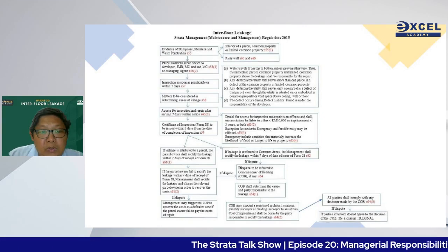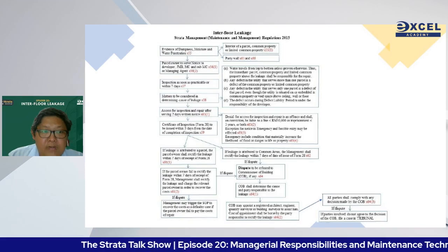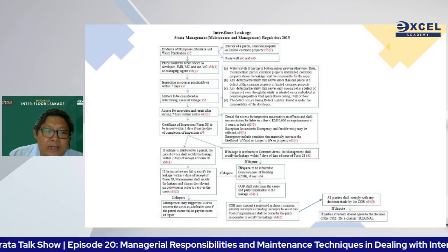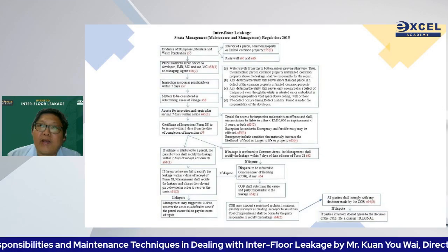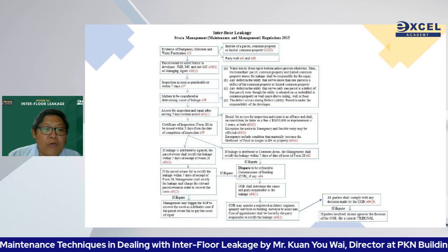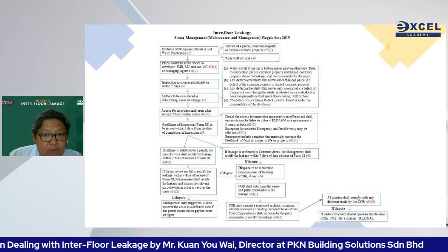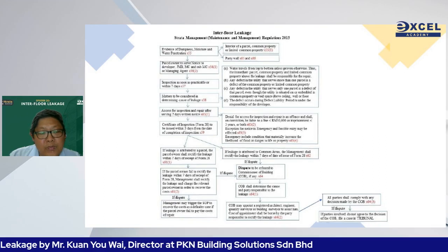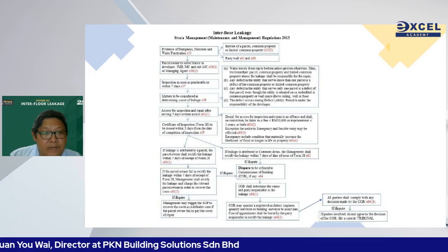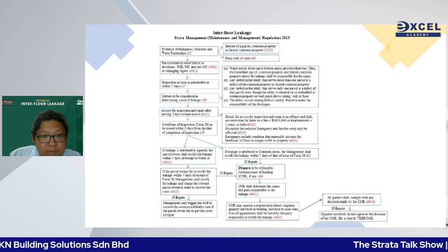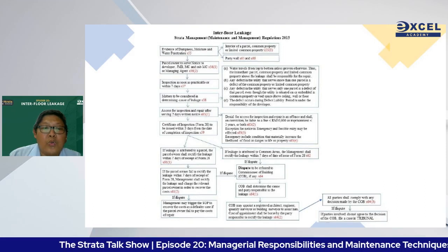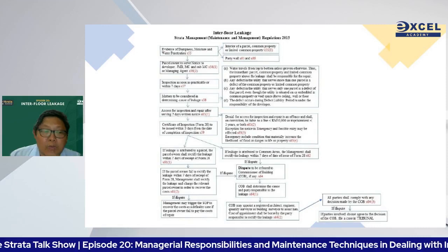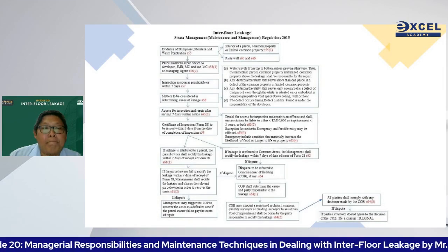If dispute continues and the COB intervenes, the COB can appoint a surveyor, architect, or engineer to carry out inspection, with fees borne by the responsible party. After all inspections, within five days the building manager must issue Form 28, which identifies the responsible party for repairs and states the reason.